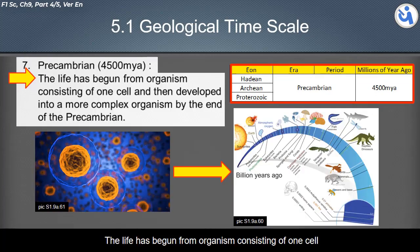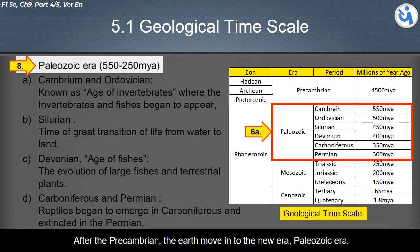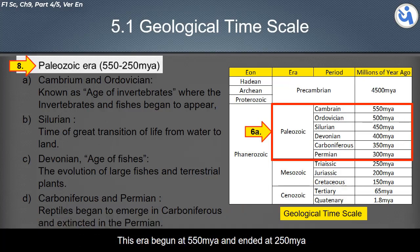About the Precambrian eon: life began from organisms consisting of one cell, and then developed into more complex organisms by the end of the Precambrian. After the Precambrian, the earth moved into the new era — the Paleozoic era — which began at 550 million years ago and ended at 250 million years ago.